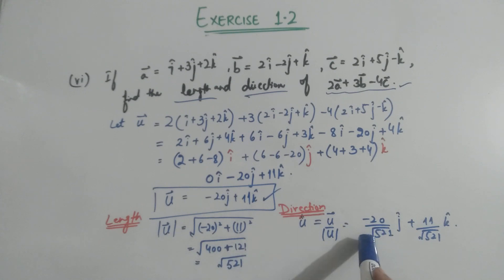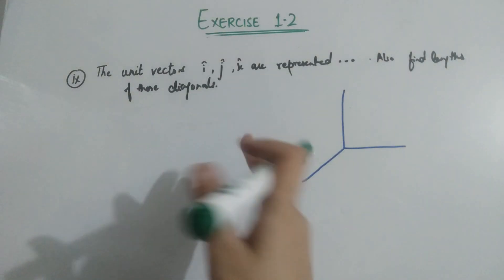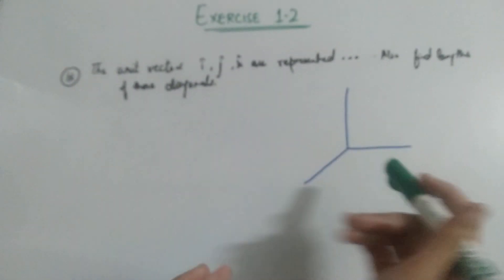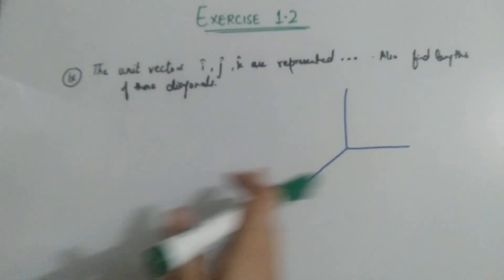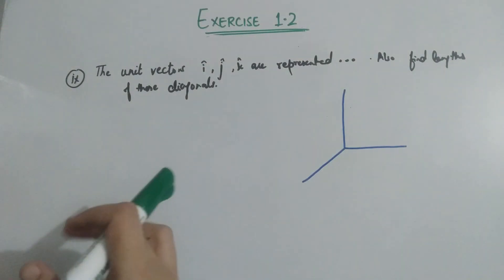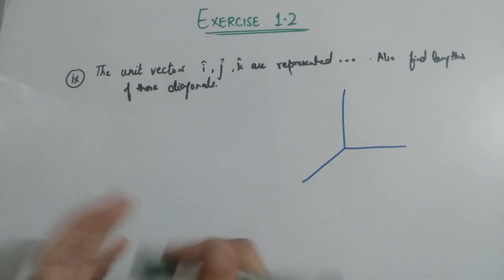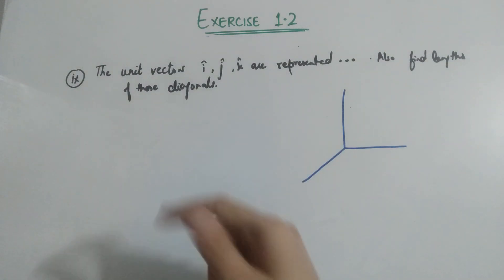In this question, i, j, and k represent the x-axis, y-axis, and z-axis of a cube. You have to find the lengths of the diagonals of this cube.